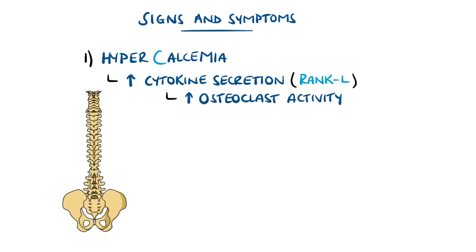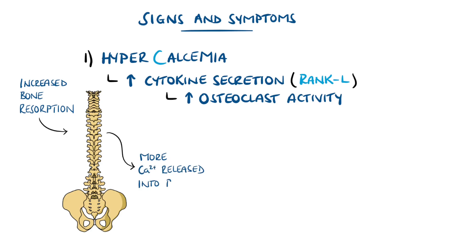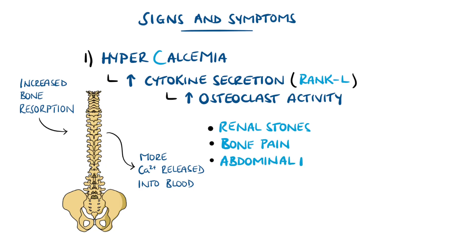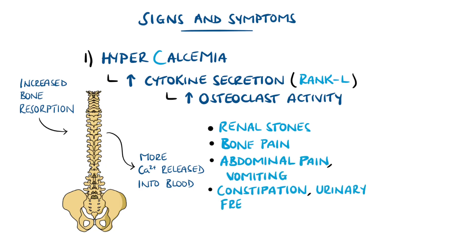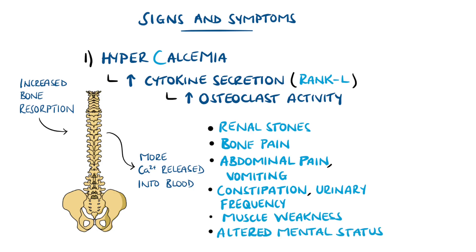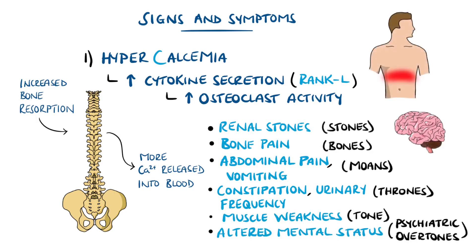And as part of that, calcium is released into the blood. Hypercalcemia itself then has its own presentation, such as renal stones, bone or abdominal pain, constipation or increased urinary frequency, muscle weakness, and altered mental status.